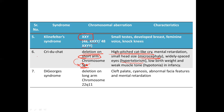Finally, the last one is DiGeorge syndrome, caused by deletion in the long arm of chromosome 22. The characteristic features include a cleft palate, cyanosis, abnormal facial features, and mental retardation. They also have weak immunity, which has something to do with the development of the thymus — you can read more about that as well.